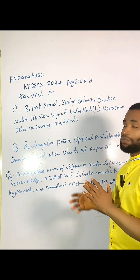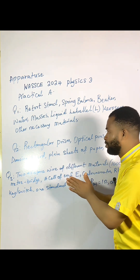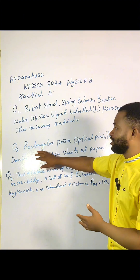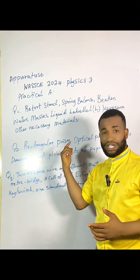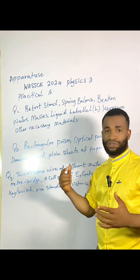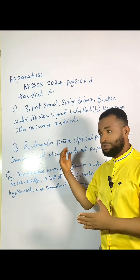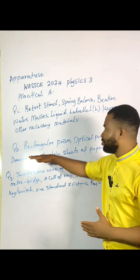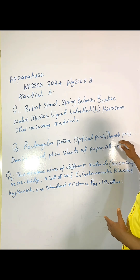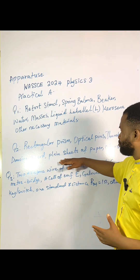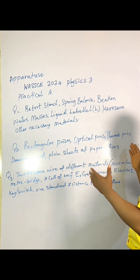So relative density is what number one is targeting. For number two, remember we have done this experiment in our previous practicals — you can go to the playlist for WASSCE practicals and find it there. The apparatus for number two include a rectangular prism, optical pins, thumb pins, drawing board, plain sheets of paper, and others.